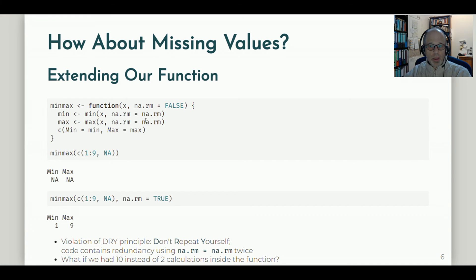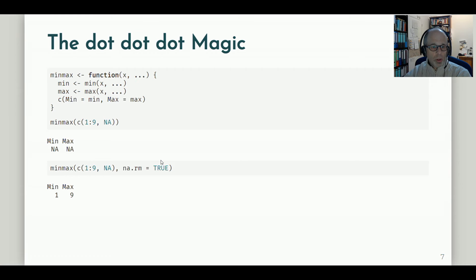Just think of a use case where we maybe not have only two calculations here, but maybe ten or more. We would have to repeat this na.rm every time for each type of calculation that we perform in our function body. So this is not very convenient and it would be good to have a shortcut, and obviously this shortcut is the dot dot dot notation.